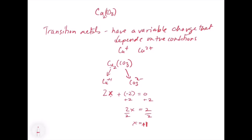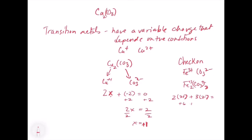You can check a previous answer, like iron three carbonate: Fe₂(CO₃)₃. To verify, multiply 2 times the +3 charge of Fe, and add 3 times the −2 charge of CO₃. That gives +6 plus −6, which equals zero — it checks out. So you can either look at it directly and confirm charges balance, or set up an equation — both methods work.